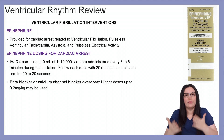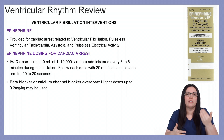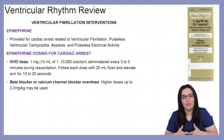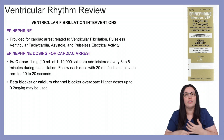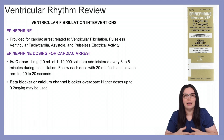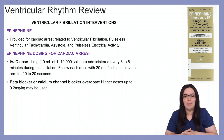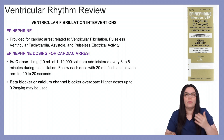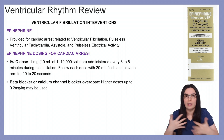Looking at epinephrine, the dosing is a bit different from what we discussed for symptomatic bradycardia patients. It can be given for idioventricular rhythms or for cardiac arrest related to ventricular fibrillation, pulseless ventricular tachycardia, asystole, and pulseless electrical activity. The IV or IO dose is 1 milligram — that's 10 mL of a 1:10,000 solution — administered every three to five minutes during resuscitation, followed by a 20 mL normal saline flush and elevating the extremity for 10 to 20 seconds to get that medication quickly to the heart.